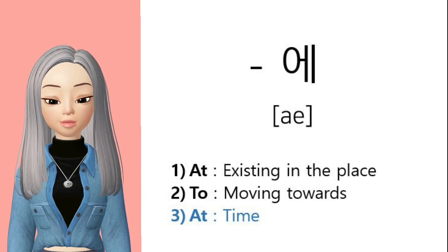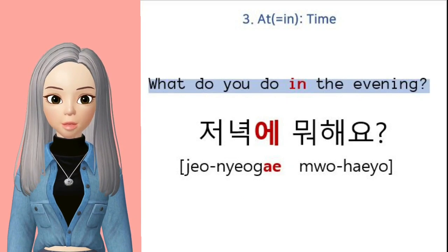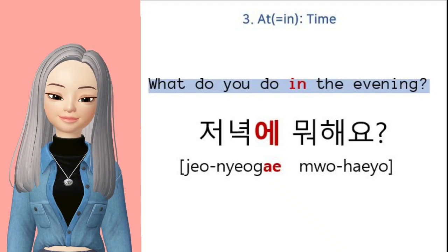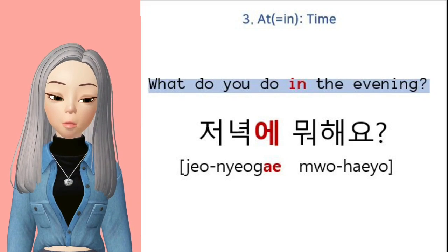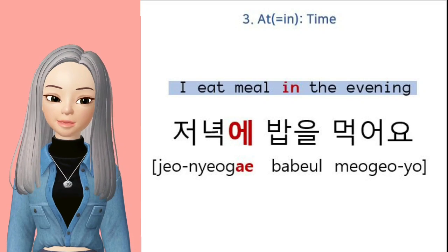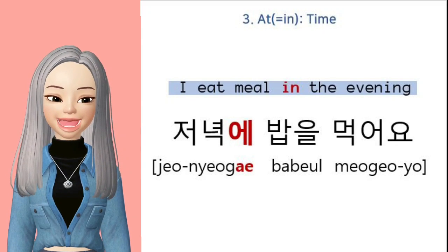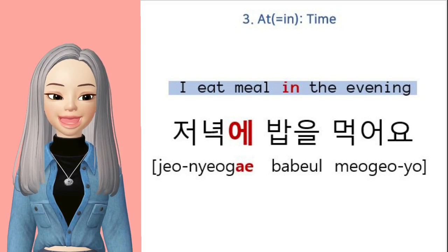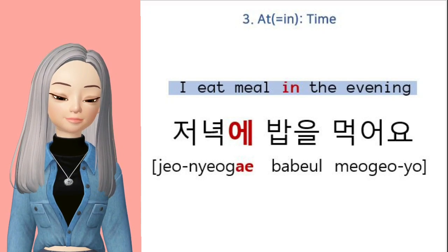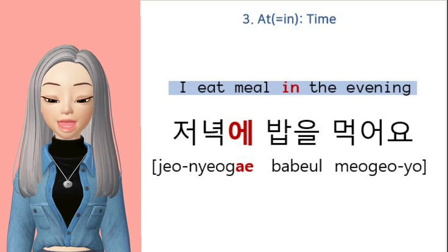The third meaning of 에 is 'at' as in time. For example, 'What do you do in the evening?' — 저녁에 뭐 해요? In the evening I eat a meal — 저녁에 밥을 먹어요. Here, we say 밥 for dinner or meal, but actually 밥 means cooked rice. But as Korea's main meal is rice, we say 밥 for meal.